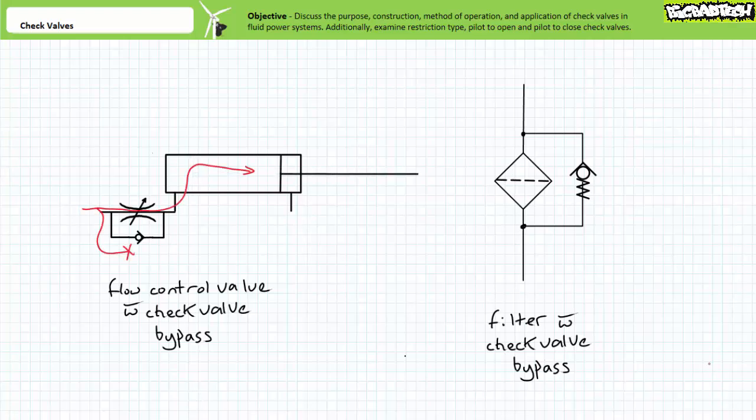Since pressurized flow to the cap end would force the check valve closed, all flow is forced to negotiate the narrow restriction provided by the flow control valve. The closed check valve makes the narrow flow control valve orifice the only available route for fluid. In this case, the cylinder would extend in a controlled and predictable fashion as dictated by the adjustable flow control valve orifice.